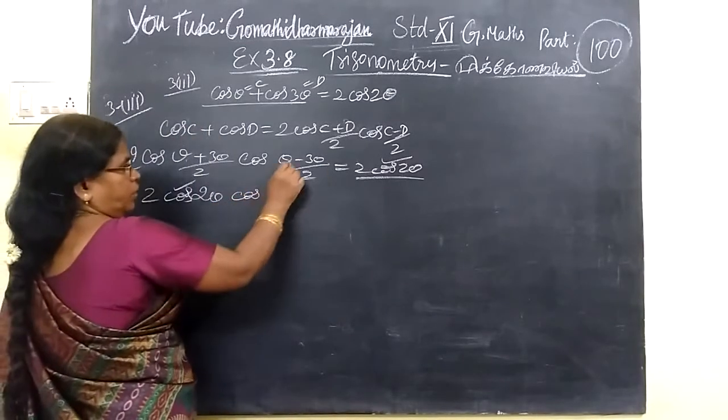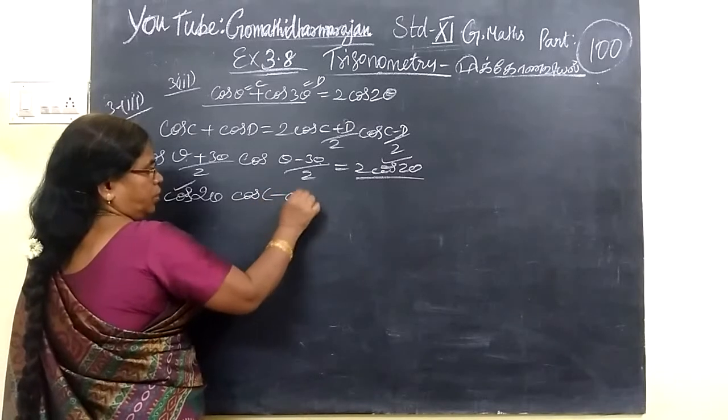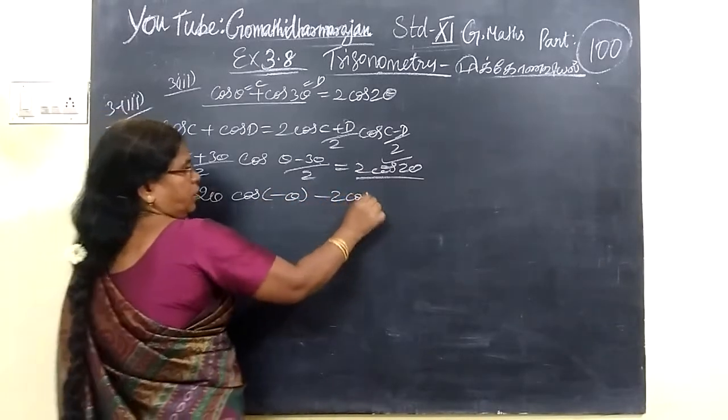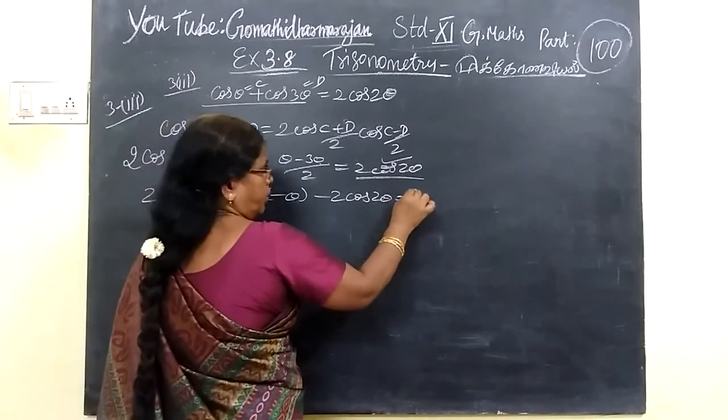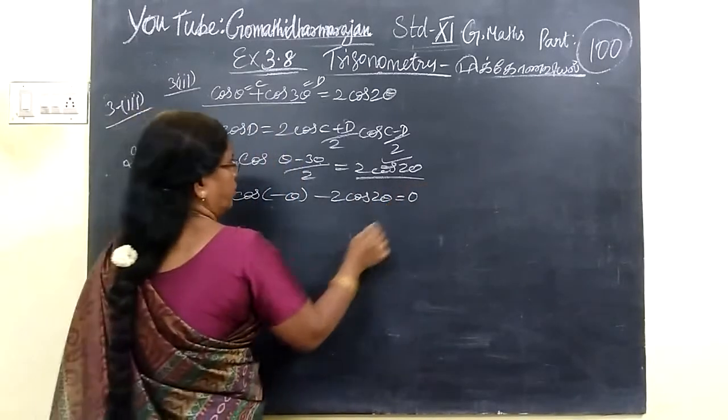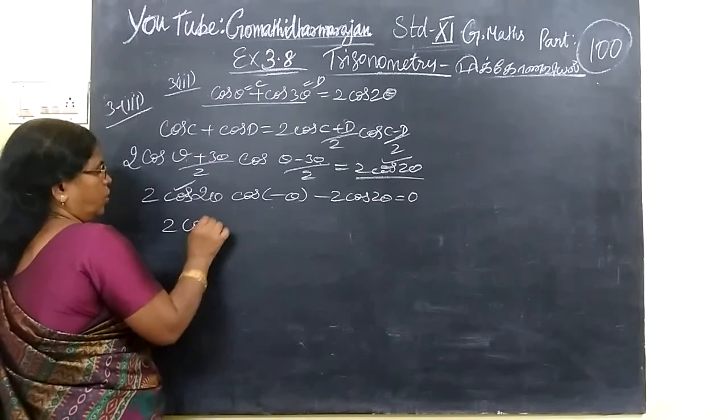So here we are going to be minus 2θ/2, that is minus θ. Here's 2 cos θ equals 0. Take 2 cos 2θ, this is cos θ only.